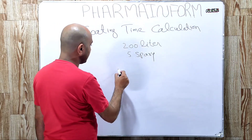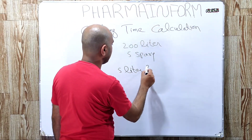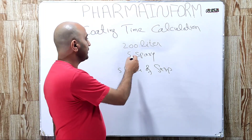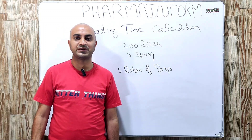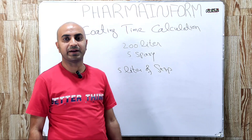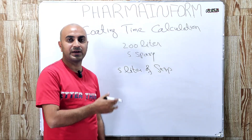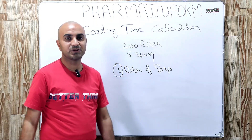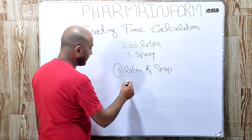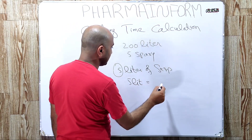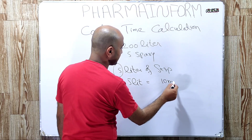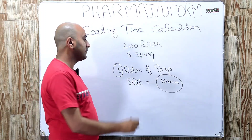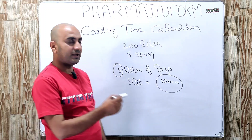For this, we will take 5 liters of suspension in a measuring beaker and apply this 5 liters of suspension over our tablets, also noting down the time required to finish these 5 liters. Suppose 5 liters of suspension is finished in 10 minutes, meaning it takes 10 minutes to spray 5 liters of suspension over the tablets.